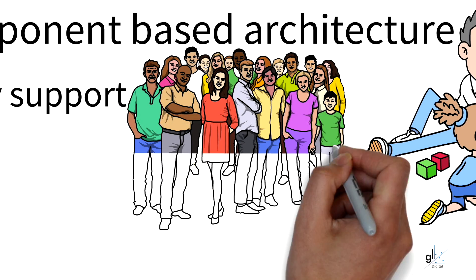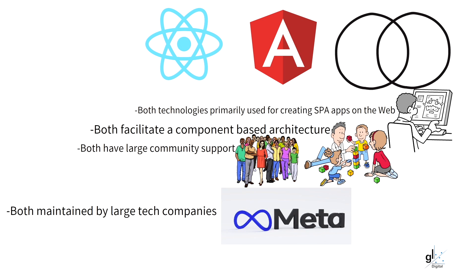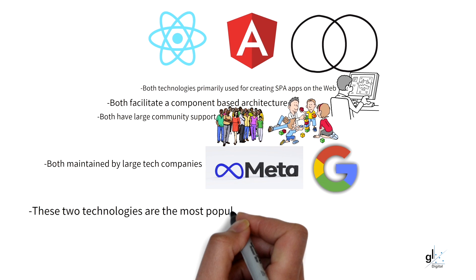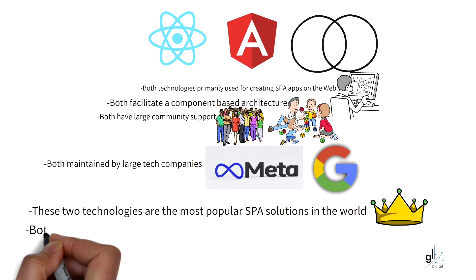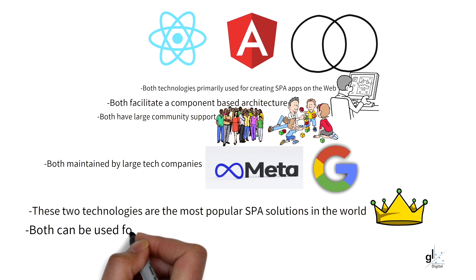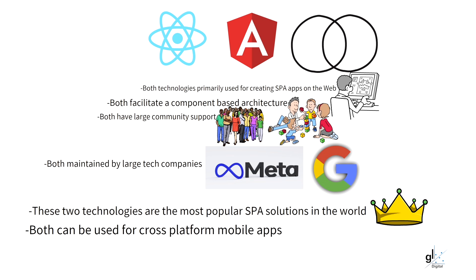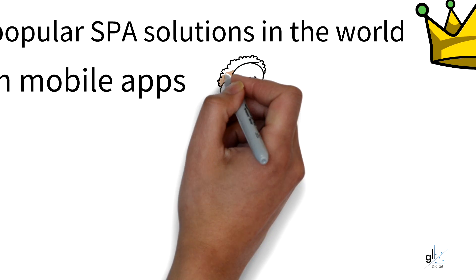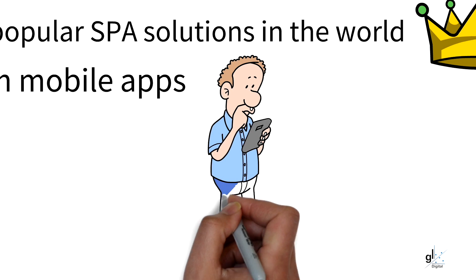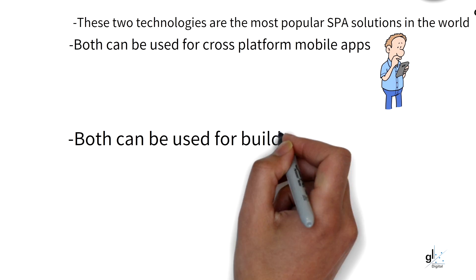React is maintained by Meta, formerly Facebook, and Angular is maintained by Google — both with communities of individual developers and companies. These two technologies are the most popular solutions adopted for providing front-end UI user interactive functionality on the web. Both can also be used for creating cross-platform native mobile solutions: Ionic can be leveraged for Angular cross-platform mobile applications, and React Native can be leveraged for React cross-platform mobile applications.